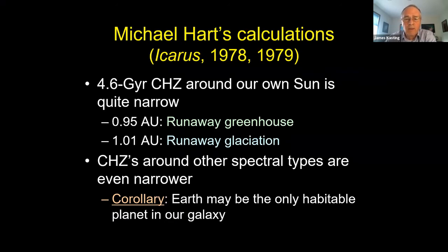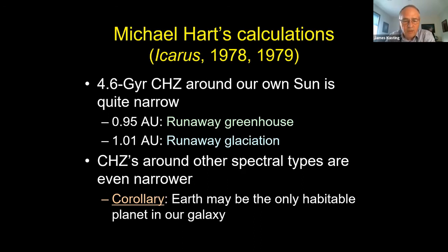Hart wrote a second paper applying the same model to planets around other types of main sequence stars. The model was tuned to work for the Sun, so not surprisingly it worked even more poorly for other stars. The corollary — which you can still find in old astronomy textbooks — is that Earth might be the only habitable planet in our galaxy. I read this as a graduate student and was somewhat dismayed, because Carl Sagan was popular at the time. One of my first books that got me interested was 'Intelligent Life in the Universe' by Shklovsky and Sagan. I vowed to work on this problem myself.